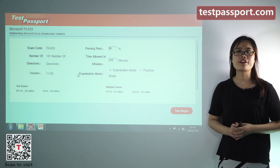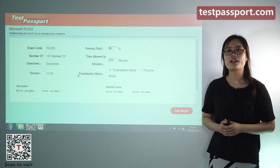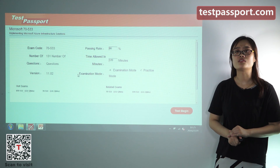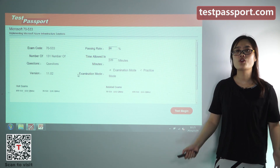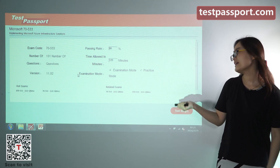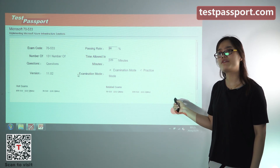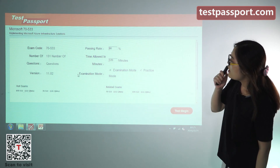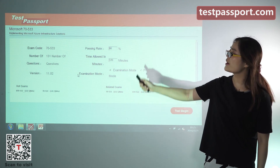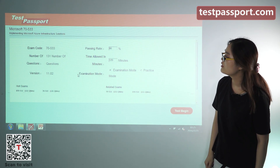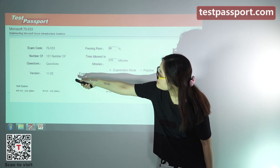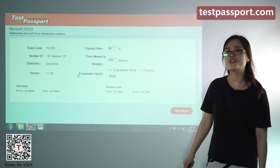One is PDF and the other is software version. Our PDF version can be printed out and it will be very convenient for you to study. Here is the home page of our software version. As you can see, there are 131 questions in our dumps. You can also see the version — it is 11.02.